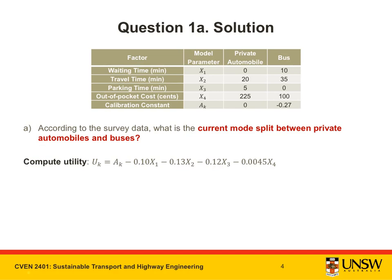We are given directly the calibrated utility function, but before we substitute any numbers in, let's first talk about the concept of utility. Broadly speaking, utility represents the amount of use you get from buying something. The value of the utility can be used to compare different commodities — the higher the utility, the more use or benefit you get from it and the more likely you are to choose that particular commodity. In the context of mode choice, the utility for each mode is made up of different attributes relevant to the decision-making process, shown in the table here.